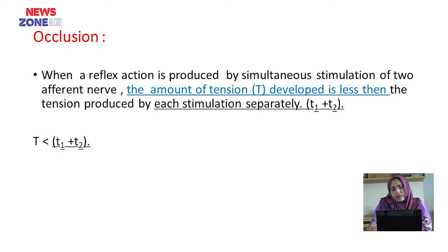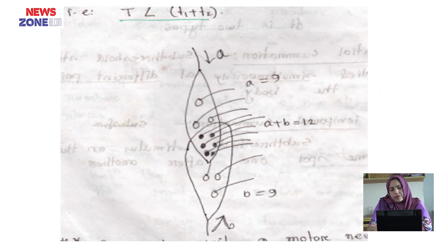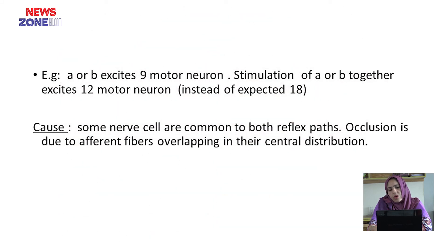Occlusion: when a reflex action is produced by simultaneous stimulation, the amount of tension developed is less than the tension produced by each stimulation separately. This is because some nerve cells are common to both reflex pathways. Occlusion is due to efferent fiber overlapping in the center of distribution.